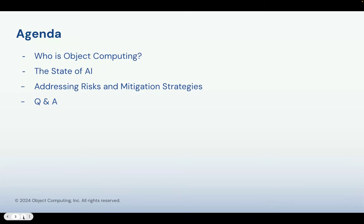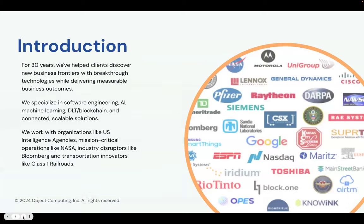Then we're going to be exploring the state of AI. We're now a little over a year past when ChatGPT first dropped, so really exploring where we are now heading into 2024. The bulk of this webinar is going to be covering addressing the risks and mitigation strategies around the threats, the biases, and some of the challenges we're facing with AI. And then as promised, at the very end, we've got our Q&A. Drop your questions into the chat and we will hold time at the end to visit them. Let's dive into the introduction. I'm going to hand it over to Andy.